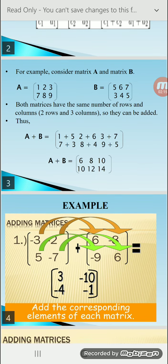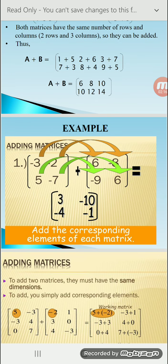We can explain one more example. Matrix 1 is: −3, −2, 5, and −7. Second matrix is: 6, −8, −9, and 6. Then the resultant is: 3, −10, −4, and −1.